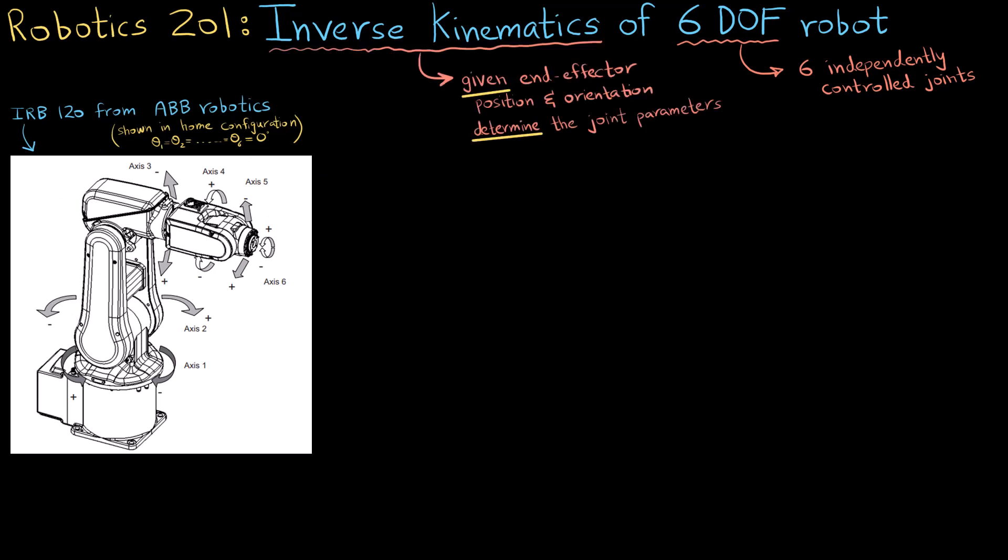So now what is inverse kinematics? In inverse kinematics you are given the end effector position and orientation and you have to determine the joint parameters. In this case what angles of the motors would you need, what commands would you need to give the motors in order to make the robot go to a certain position with a certain orientation.